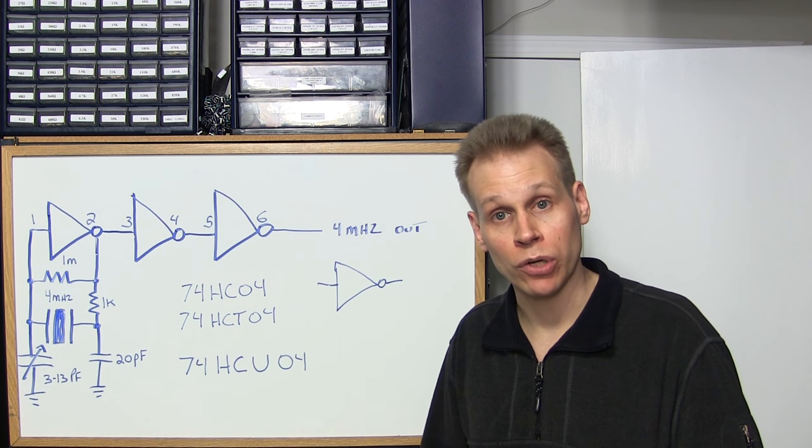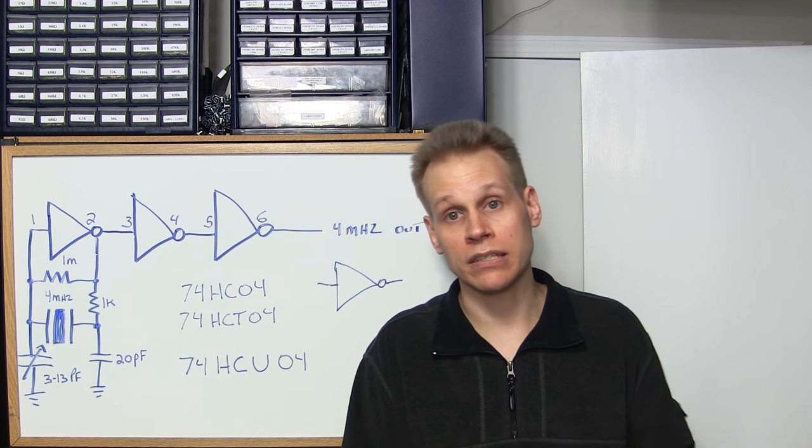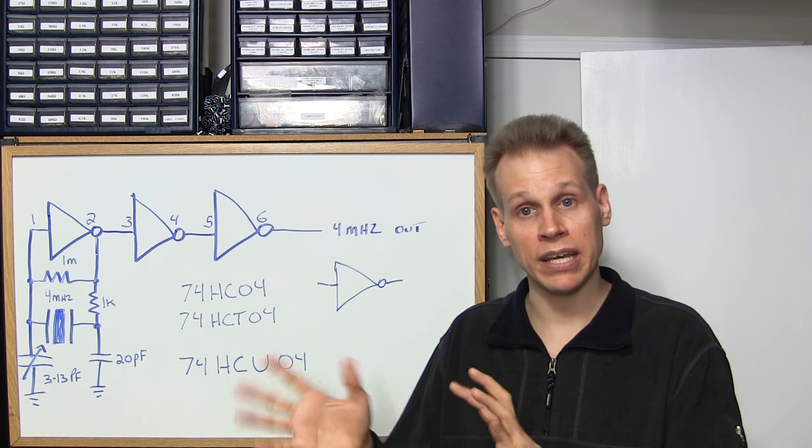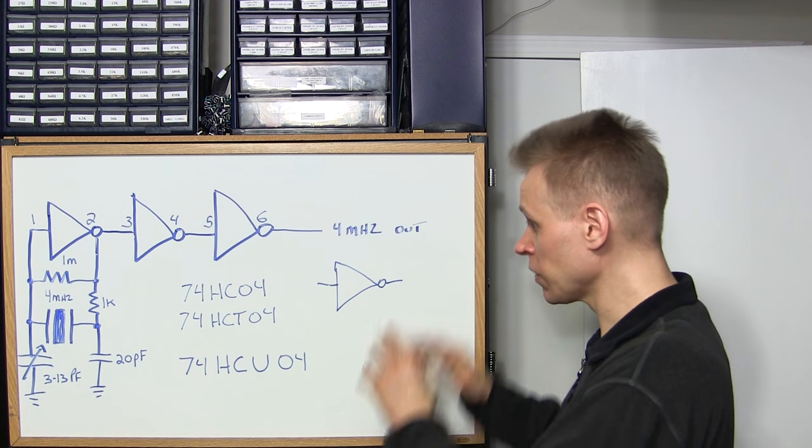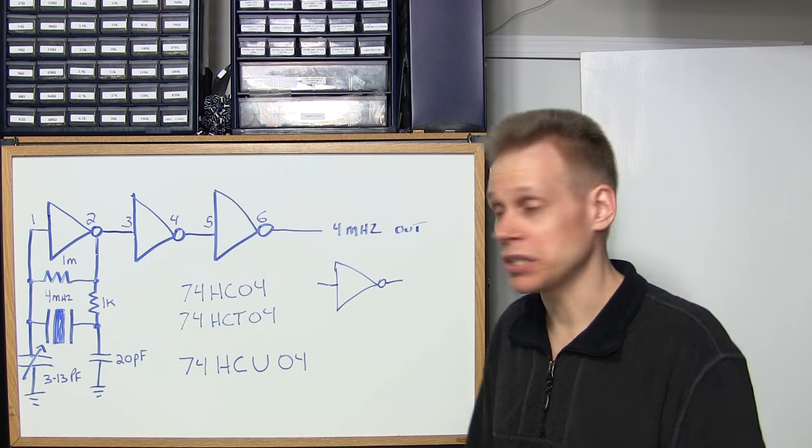Just the input, you can leave the outputs alone of all unused gates or inverters. Don't let them just float. That will go for everything in this entire frequency counter build. You don't want to leave any gates floating or any inverters or anything like that floating.